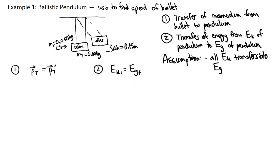So we need a two-part strategy. Part one: the total initial momentum equals the total final momentum. Part two: the gravitational potential energy gained equals the kinetic energy the pendulum had just after the collision. We're going to reverse-engineer this — starting with the given height and working backwards to find the bullet's speed, which is ultimately what we want.